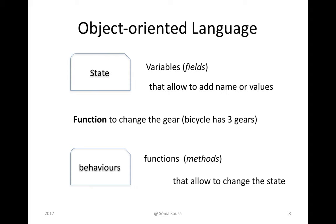Basically, the state is the part of the object where we can save specific things — where we use variables to save, for example, names or values. And the behavior is the part of the programming language where we can add or execute some behaviors that this dog, for example, can do. We call these functions or methods. We can make the dog run or make the dog bark — these are the dog's behaviors.